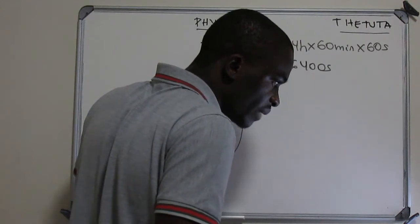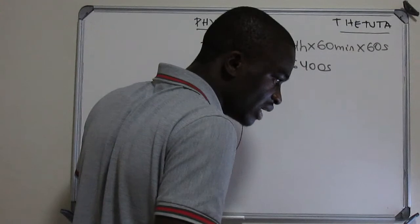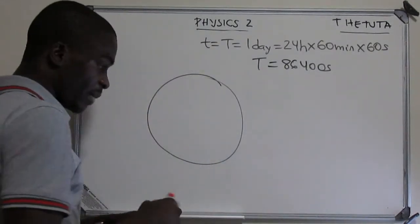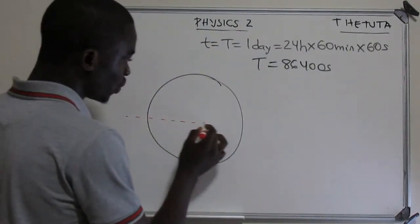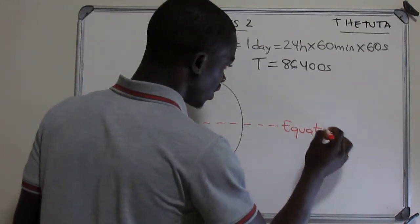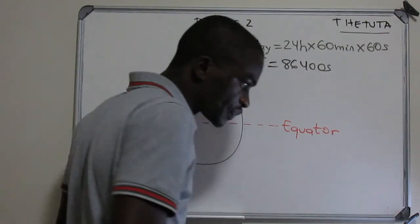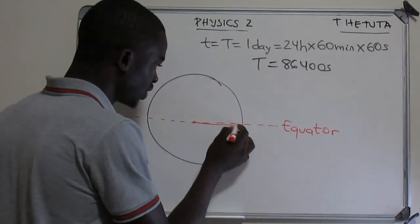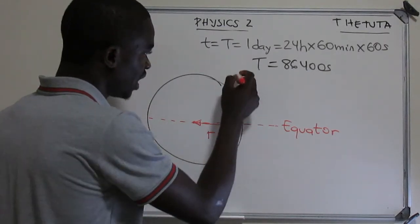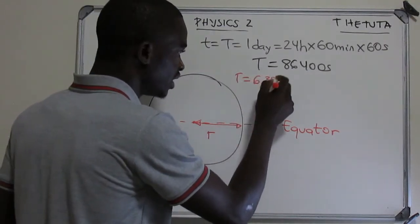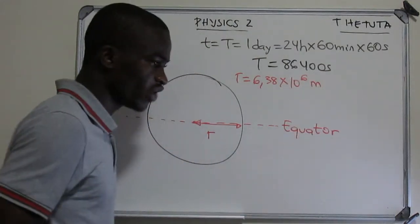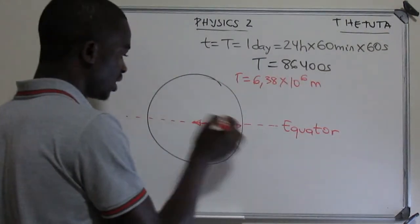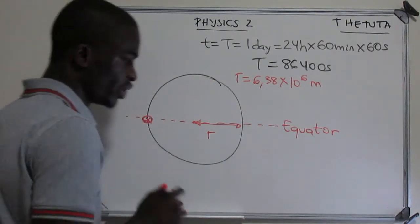The question involves an axis perpendicular to the planet's equator. The equator is the reference line around the middle of the Earth. Assuming the Earth is a sphere, the radius is given as 6.38 × 10⁶ meters. We need to determine the speed and centripetal acceleration for a person situated on the equator.